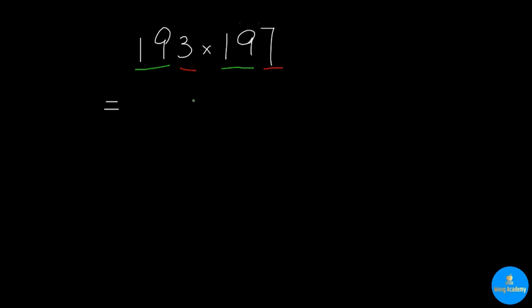3 times 7 is 21, and therefore it's ending with 21 here. As for the previous couple digits, we would do 19 times the next number after 19, which is 20. And 2 times 19 is 38. So it's 380 in this part. So 38,021 is the final answer.